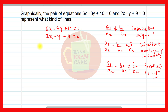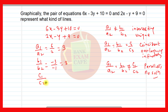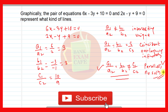Now we calculate the ratios. a1/a2 = 6/2 = 3. b1/b2 = -3/-1 = 3. c1/c2 = 10/9. So a1/a2 = b1/b2 but is not equal to c1/c2. Therefore the third condition is satisfied, and we can say the lines will be parallel lines and the equations will have no solution.